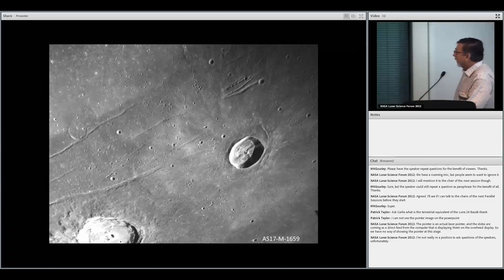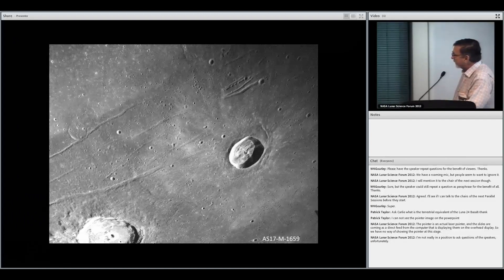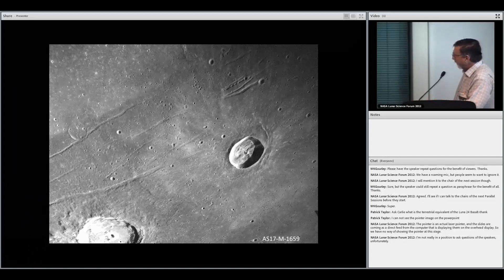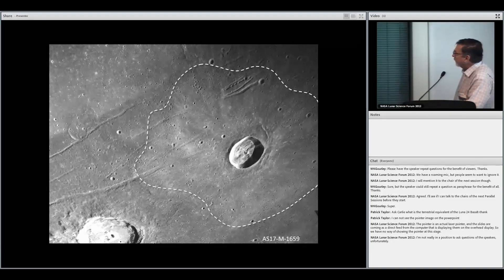Here's Dawes in southern Serenitatis, and you can see that it's nudged right up against Rima Dawes here and associated with a variety of other extensional features that are associated with a flexural response of the load in central Serenitatis. It has a very equidimensional ejecta blanket.